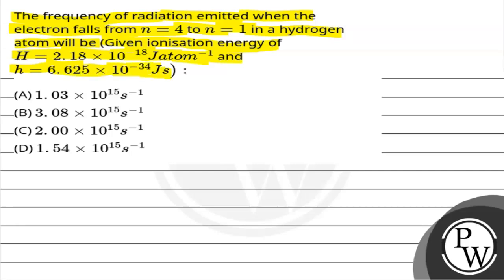We have option A: 1.03 into 10 to the power 15 second inverse. Option B: 3.08 into 10 to the power 15 second inverse. Option C: 2.00 into 10 to the power 15 second inverse. Option D: 1.54 into 10 to the power 15 second inverse.